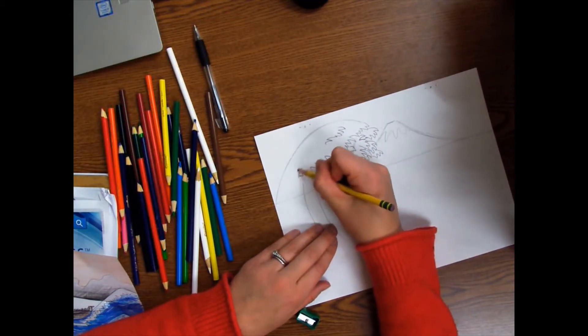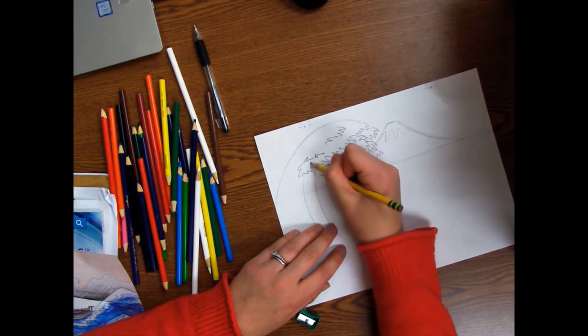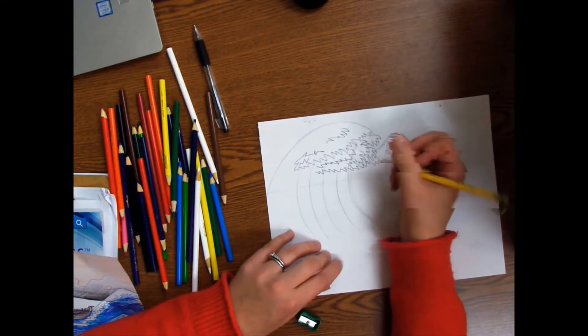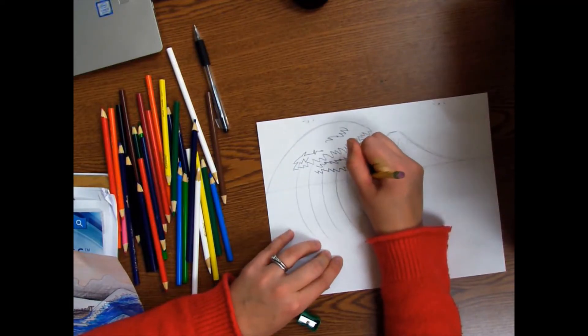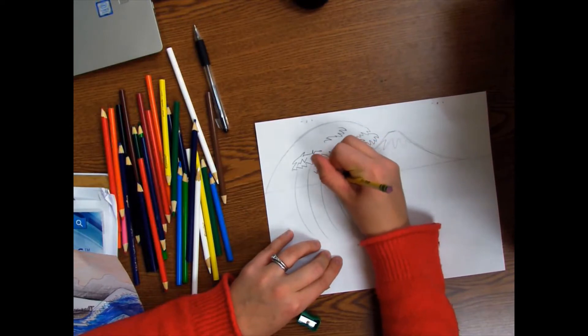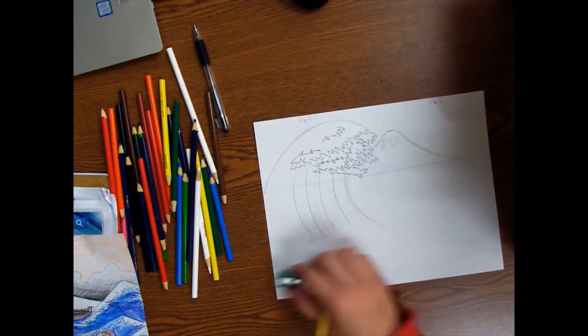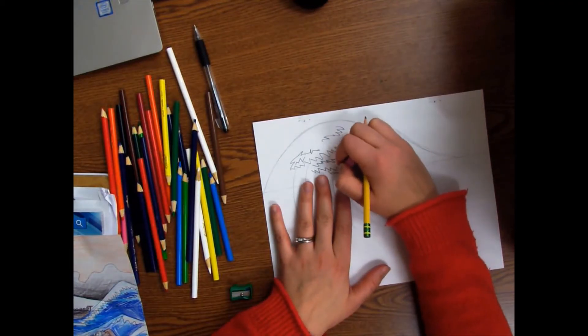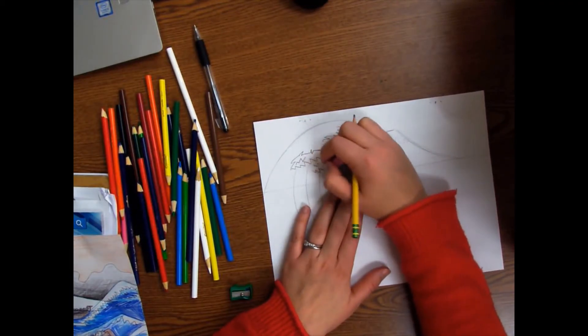And I can add some zigzags anywhere you like. You can make them really go out. I think I have enough, so then I can go in if you'd like with your eraser and just erase the extra C shapes where you ended.